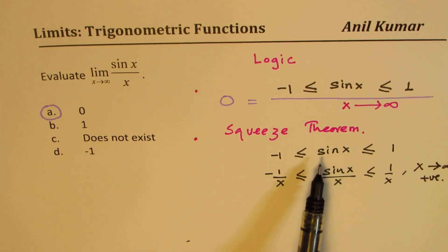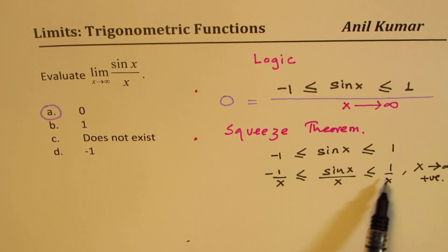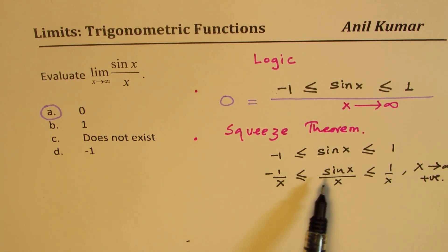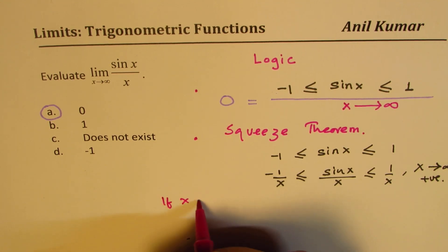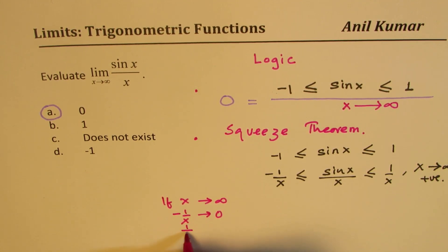In that case we get this inequality: -1/x ≤ sin(x)/x ≤ 1/x. Now clearly, if x is approaching infinity, then -1/x is approaching 0 and 1/x is also approaching 0.